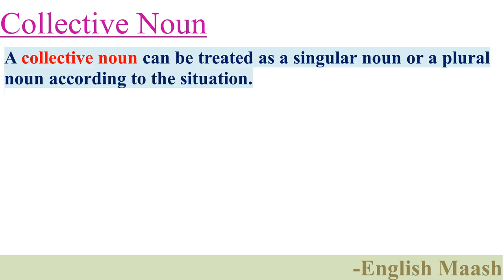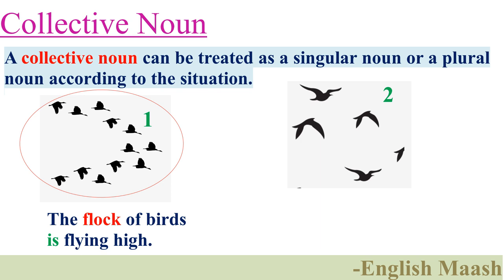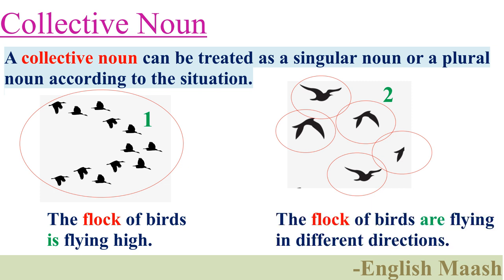Even though most of the time a collective noun is treated as singular, sometimes a collective noun may be treated as plural. In picture number one, the flock of birds is considered as a single entity, so it is correct to use rules of singular nouns: the flock of birds is flying high. We use 'is' because we consider the flock of birds as a singular noun.